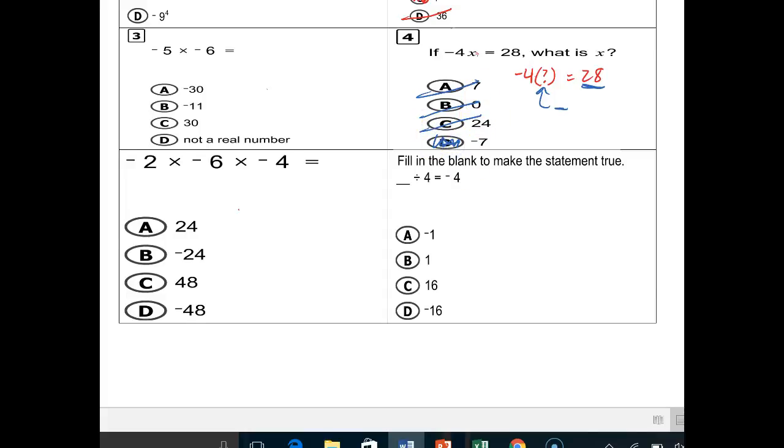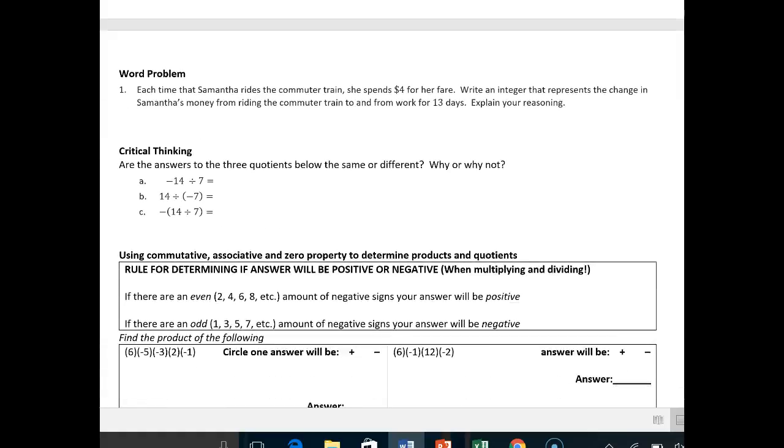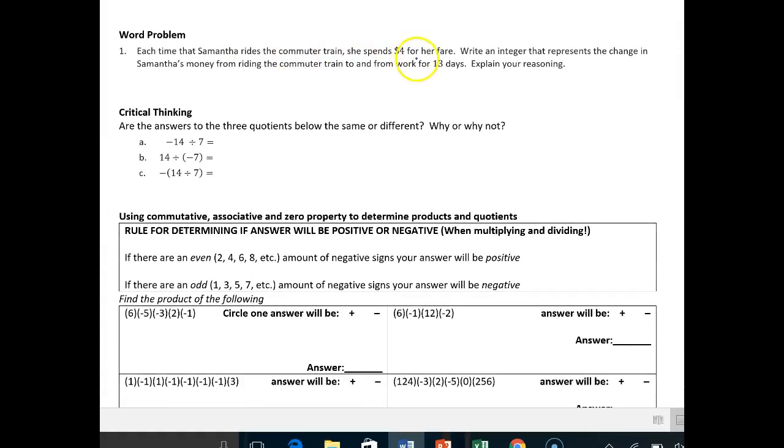Each time Samantha rides the commuter train, she spends $4 for her fare. Spending money is negative, so negative 4. Write an entry that represents the change in Samantha's money for riding the commuter train to and from work for 13 days. Spending money is negative. How many days should she do it? It was 13. This is a DSN or different signs negative. I only have one negative, so my answer will be negative. 13 times 4, 2 carry 1, 52, negative $52.